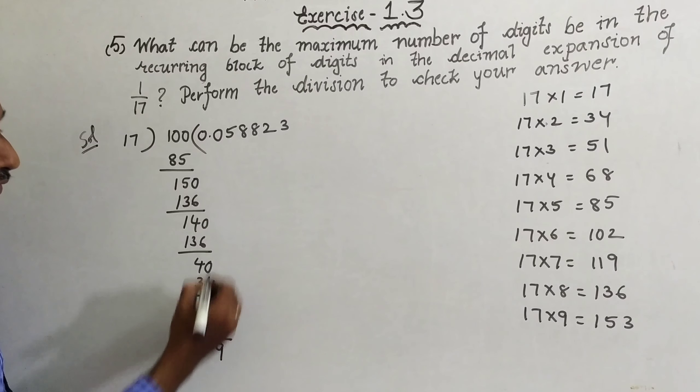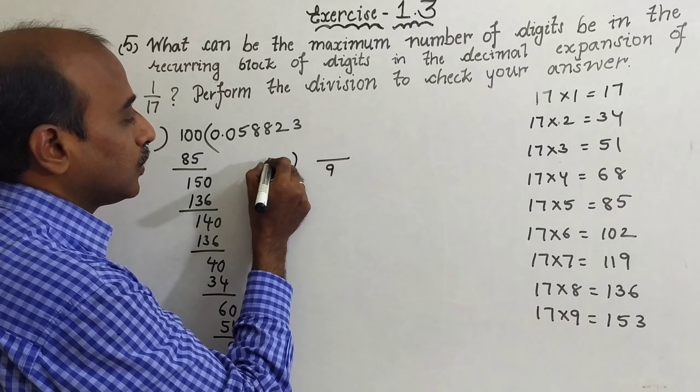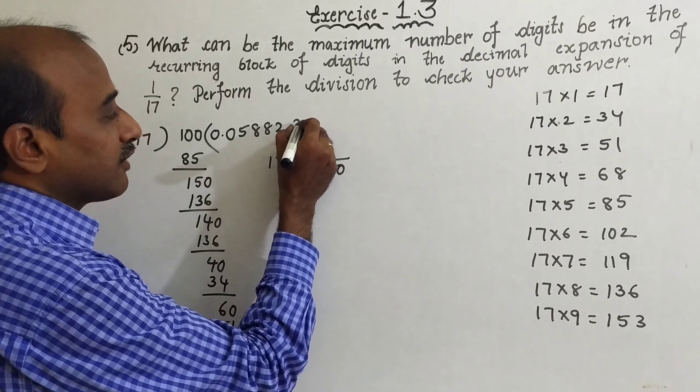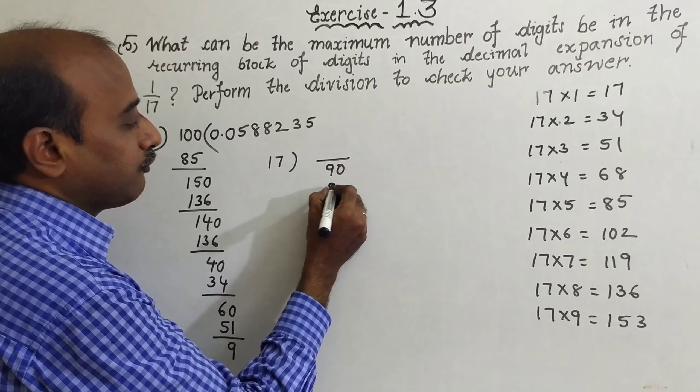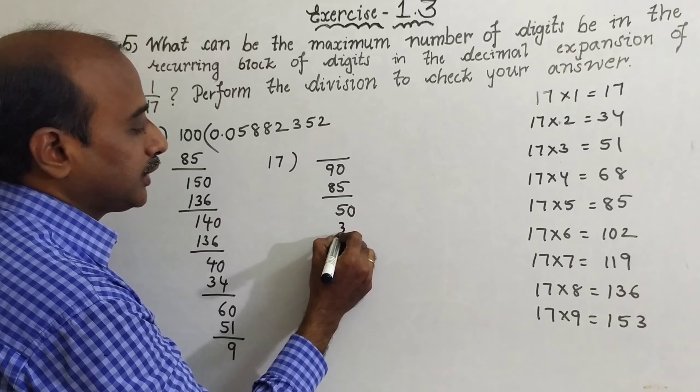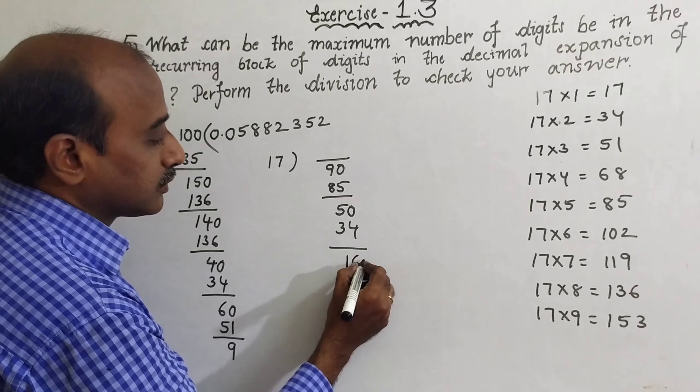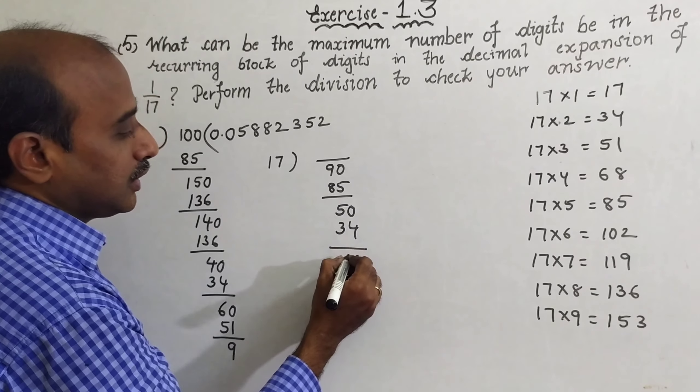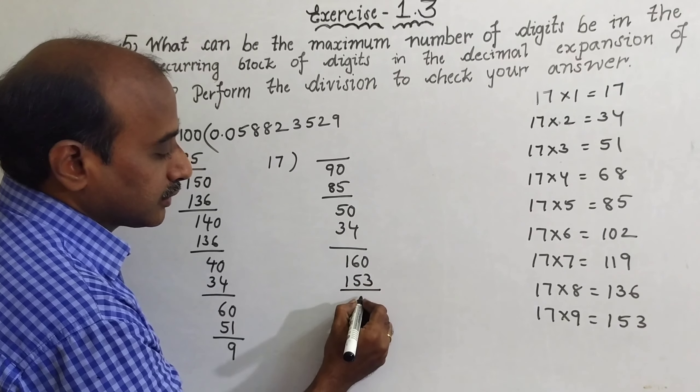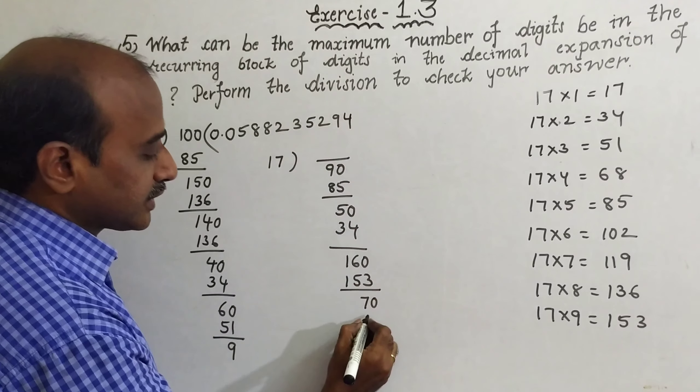So we are dividing by 17, 90. So 17 times 5 is 85. Subtract 5. 50, 17 times 2 is 34. 160, 17 times 9 is 153. Subtract 7. 70, 17 times 4 is 68. Subtract 2.